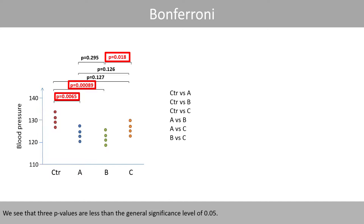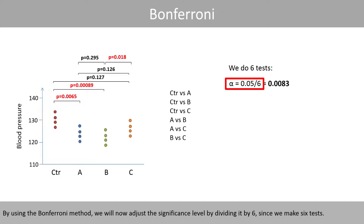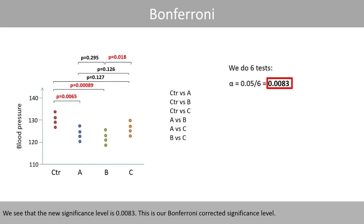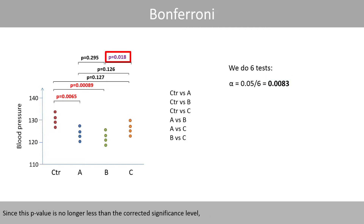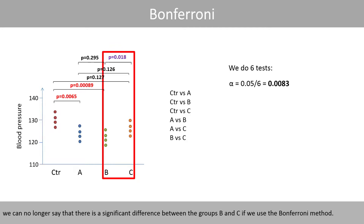We see that three p-values are less than the general significance level of 0.05. By using the Bonferroni method, we will now adjust the significance level by dividing it by six, since we make six comparisons. We see that the new significance level is 0.0083 — this is our Bonferroni-corrected significance level. Since one p-value is no longer less than the corrected significance level, we can no longer say that there is a significant difference between group B and C if we use the Bonferroni method.